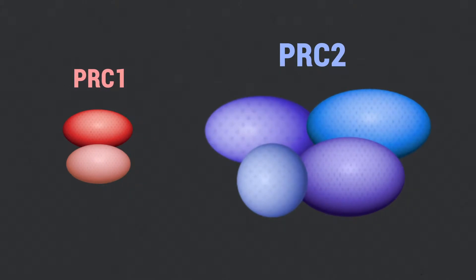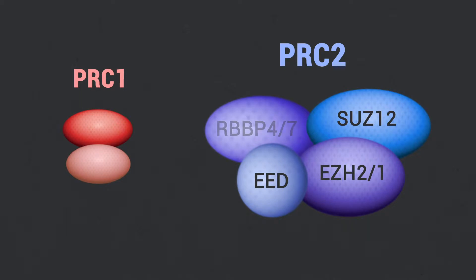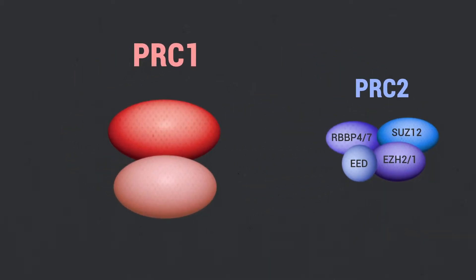The PRC2 core consists of EZH2 or 1, EED, Sys12, and RBBP4 or 7, while the PRC1 core consists of Ring1a or Ring1b, together with one of the six PCGF1 to 6 paralogs.